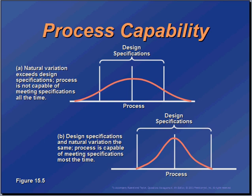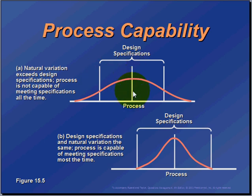The result that we intend would typically be called our design specification — this is what we expect the product or the service to deliver. As we can see here, it's shown by this bracket up here showing our specification. We expect the average of our process to be here, and we expect to have no more defects than these two ranges.